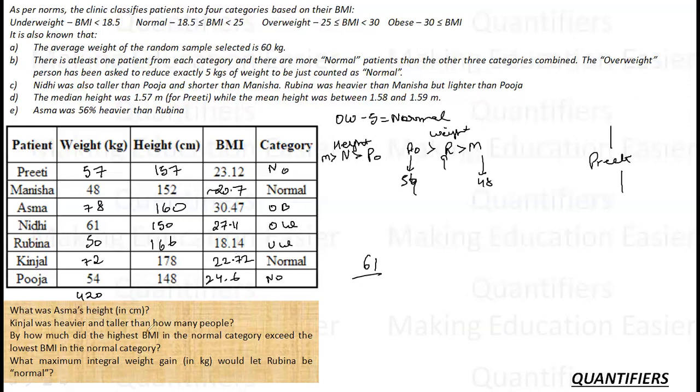What was Asma's height? 160. Kinjal was heavier and taller than how many people? She's taller than everyone, so I just need to map it against the weight part. 72, only one person is heavier, 78, so the best 5 people.